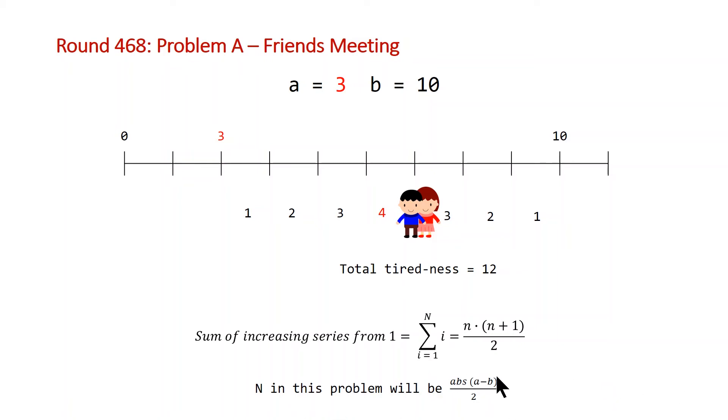And so if we plug this into our formula here, we're going to end up getting 2 times n times n plus 1 divided by 2, because we need to add the distance for both Jack and Jill. And note here that the 2s will cancel out, so we're just going to end up with n times n plus 1. So using this information, let's take a look at our code.